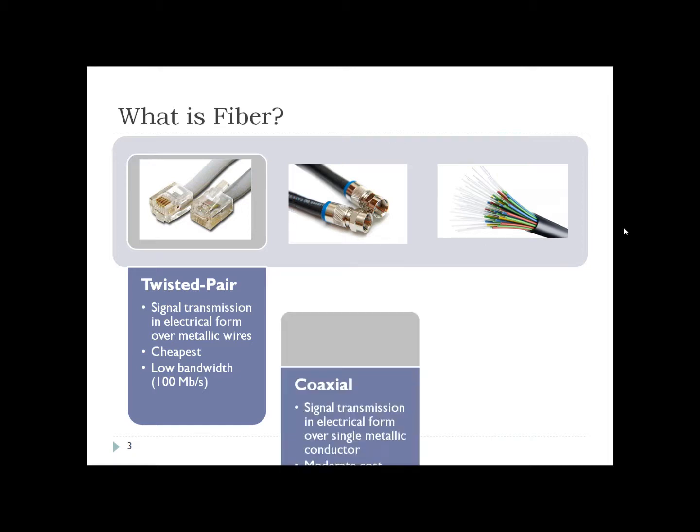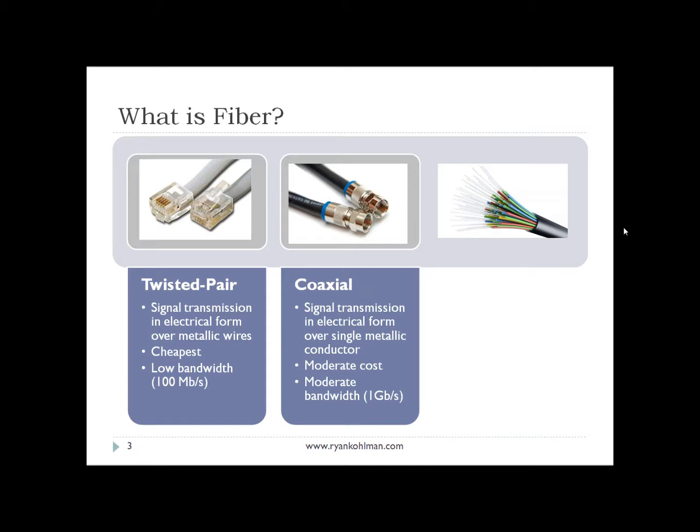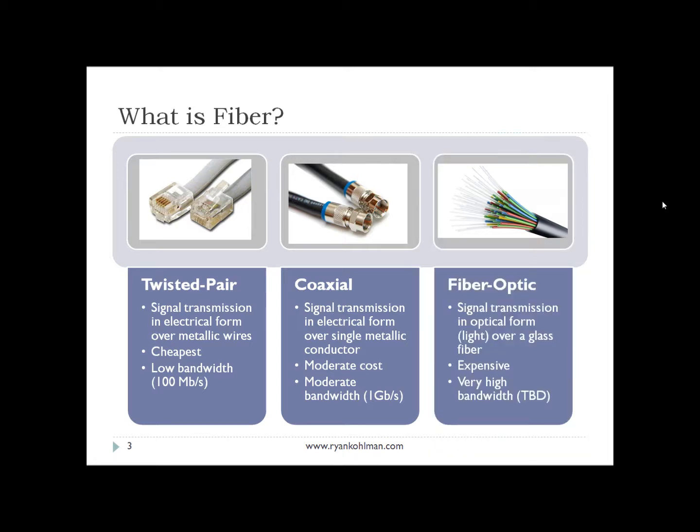The other method is coaxial, or traditionally cable. This is again an electrical signal that travels over a single metallic conductor in the middle of the cable. This form of transmission is moderate cost and has moderate bandwidth. The theoretical maximum transfer speed over coaxial is about one gigabit per second, which is right on par with what Google Fiber is currently being offered at.